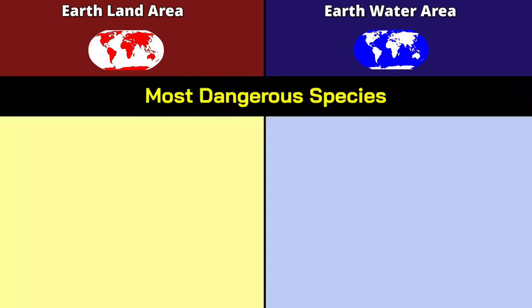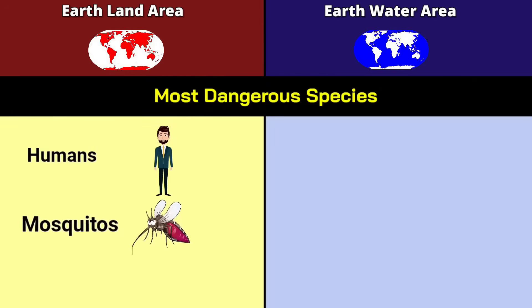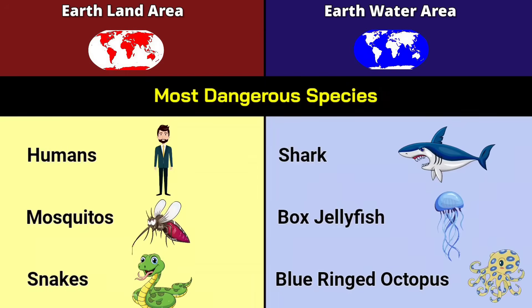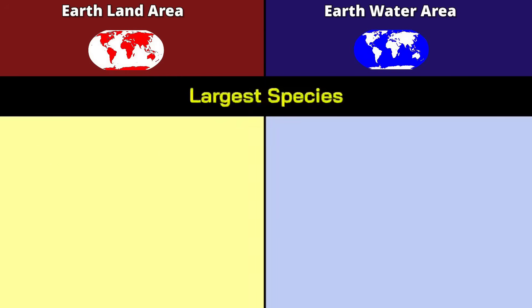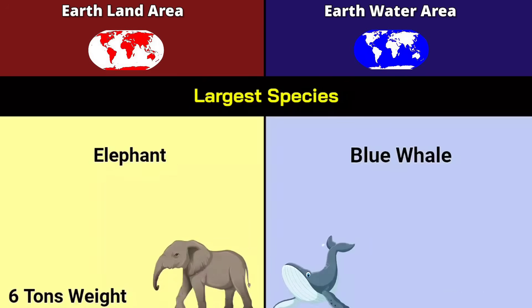Most dangerous species on land: humans, mosquitoes, and snakes. In water: shark, box jellyfish, and blue-ringed octopus. Largest species by body weight: elephant at 6 tons on land, and blue whale at 200 tons in water.